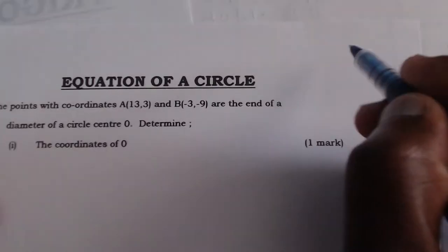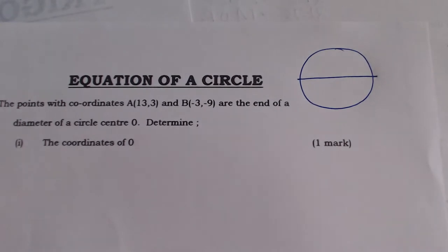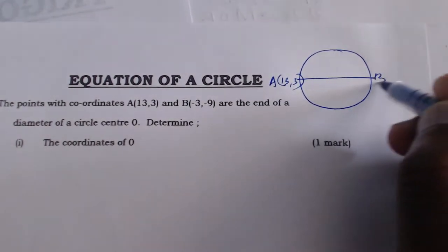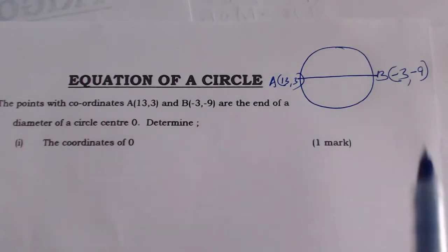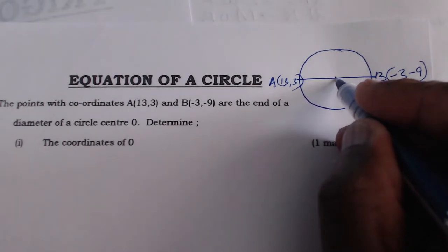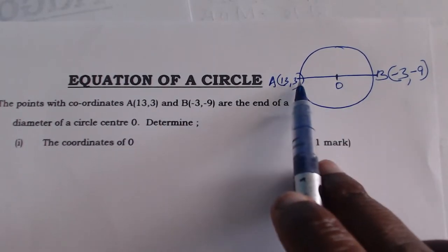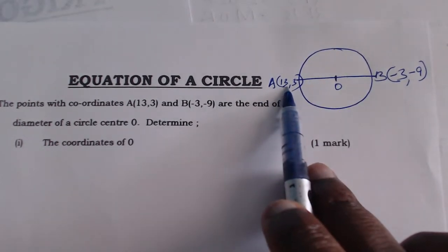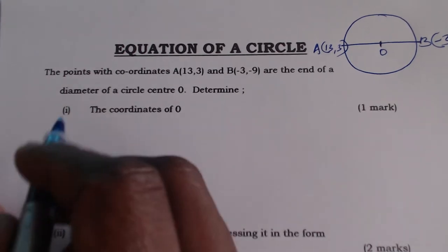Let's go to the first one. You're given the ends of the diameter of the circle, so I can sketch it here — it's a circle, and this is the diameter. Point A is at (13, 3) and point B is at (-3, -9). These are the ends of the diameter, so the center is the midpoint of this line. Given the coordinates of the endpoints, we use the midpoint formula.